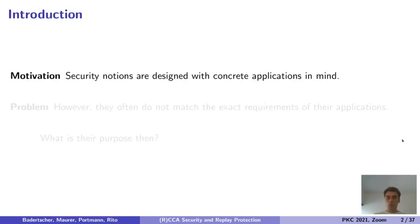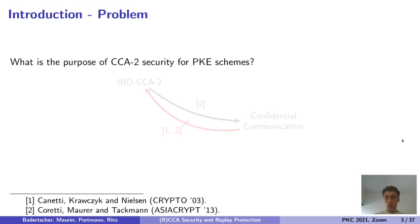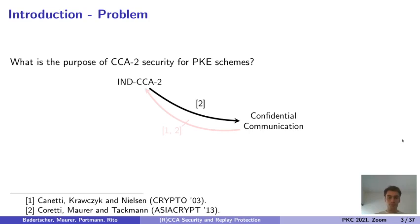Security notions are usually designed with concrete applications in mind. However, they often do not match the exact security requirements of their intended applications. For example, what is the purpose of CCA2 security for PKE schemes? On one hand, we know that CCA2 security is sufficient to achieve confidential communication. However, there are also non-CCA2 secure schemes that also allow for this type of communication.